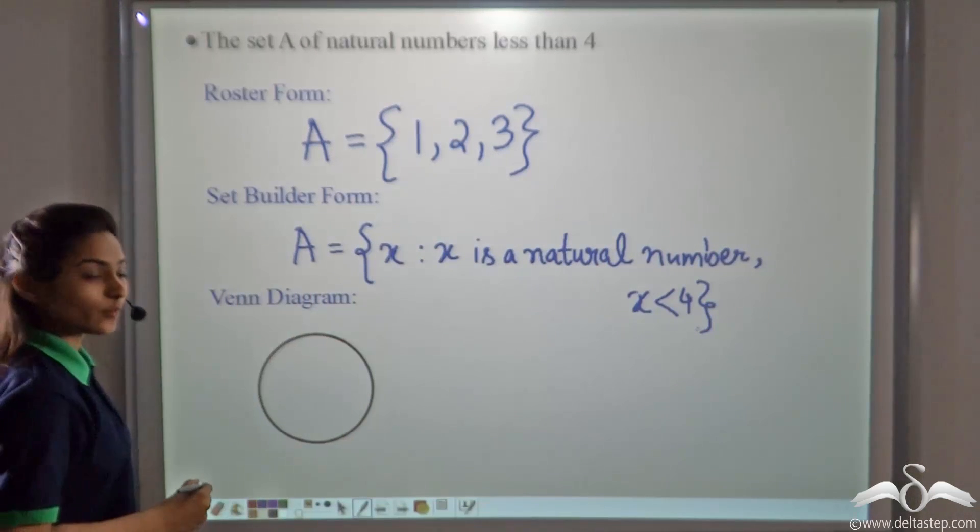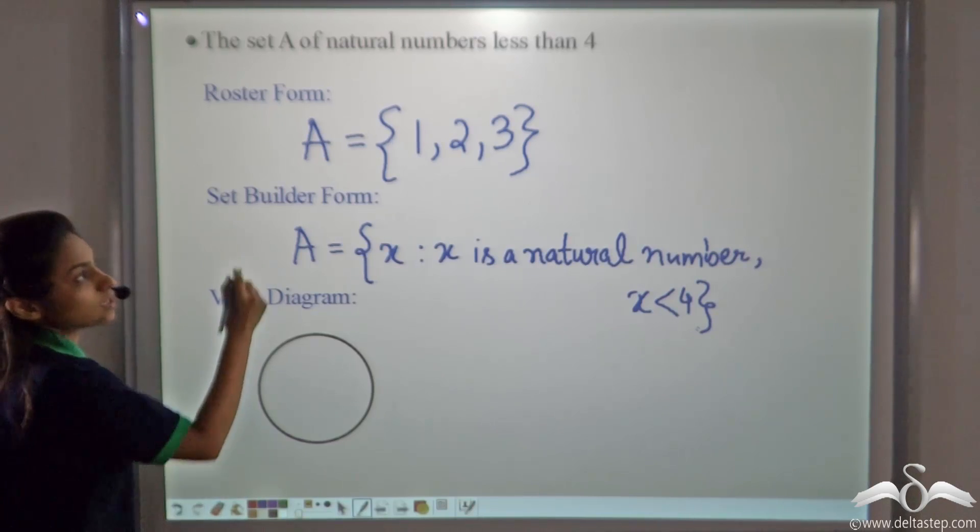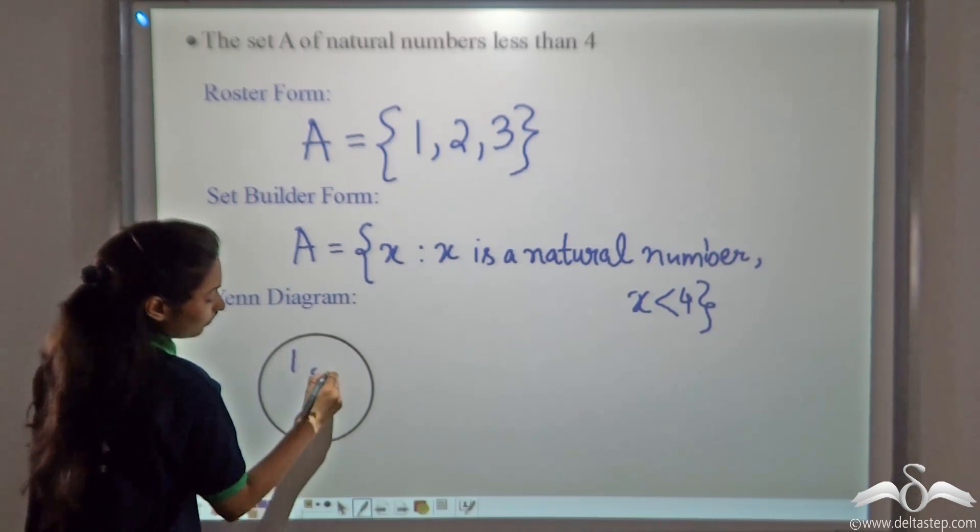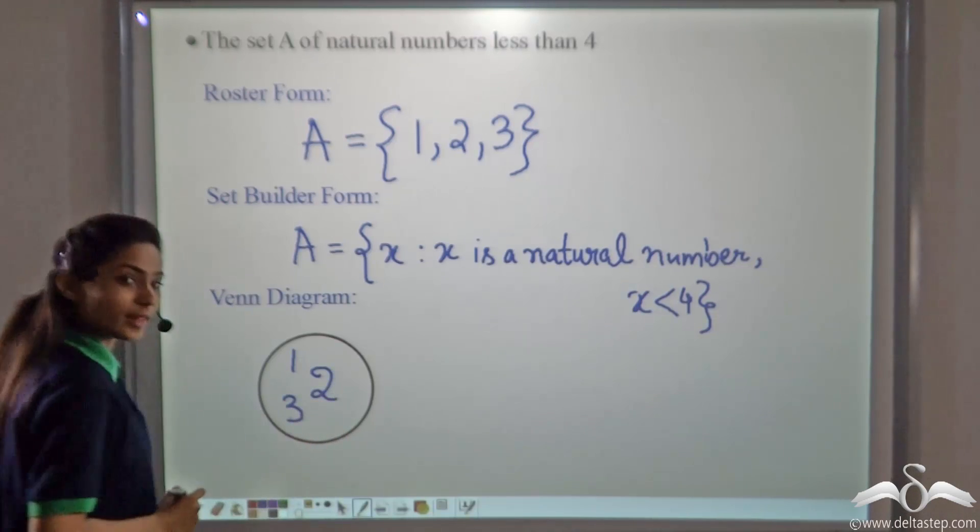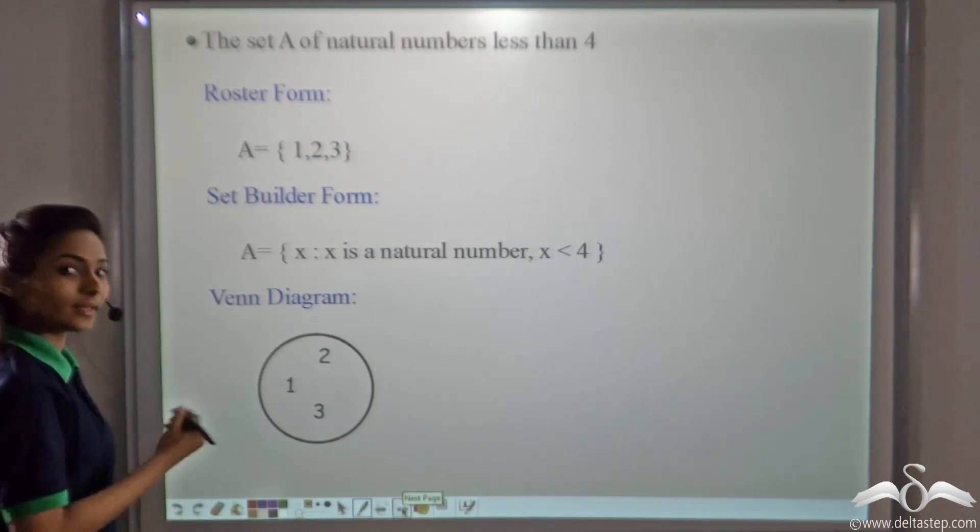Now how will we write it in Venn diagram? We will just write the elements inside the circle. So what are the elements? 1, 2, and 3. So write them. And this completes our answer. So it will look like this.